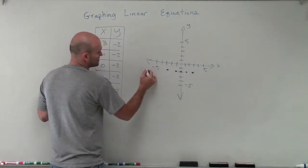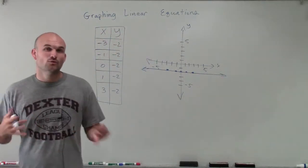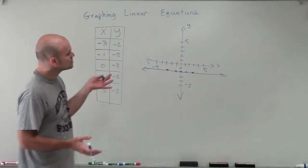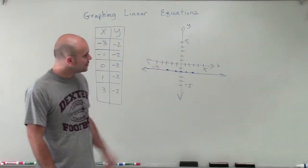And what you notice is when I connect these points, I'm creating a horizontal line. And when we talk about horizontal lines, we know that our slope is going to be 0. So we have a slope that's going to be 0.